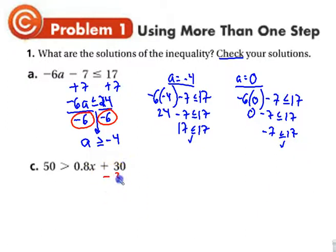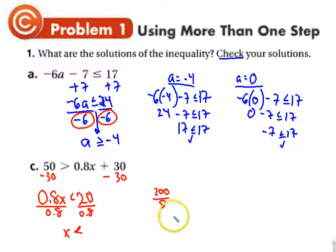So minus 30, let's switch it around. 20 divided by 0.8. I'm taking 200 divided by 8, so I get 100 over 4, which is 25. So x is less than 25. Look, I didn't pause it. I worked it out on the screen for all of you that think that I pause and use little evil demon boxes.